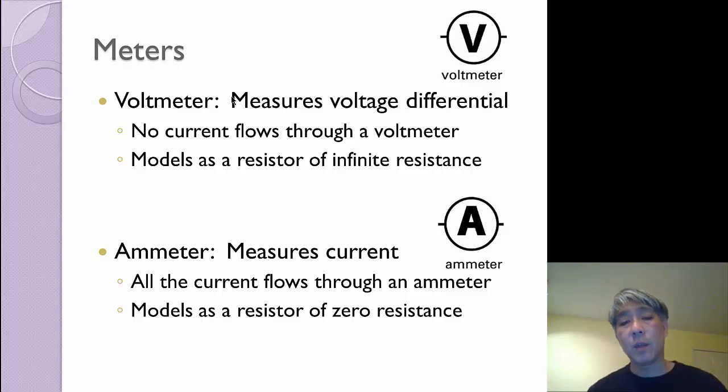Similarly, with an ammeter, all the current, because it measures current, all the current must flow through it for it to be able to count the electrons as it goes by. And so the ammeter will be an ideal one, and that's again what we'll be using, will represent zero resistance. So remember voltmeters have infinite resistance, ammeters have zero resistance.